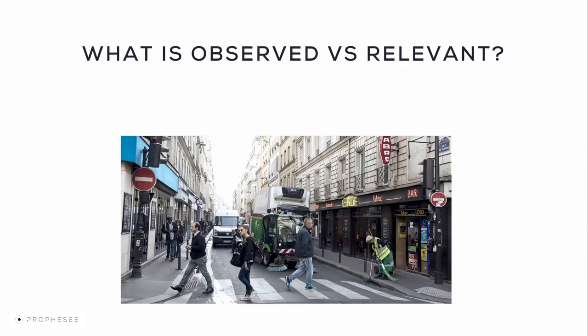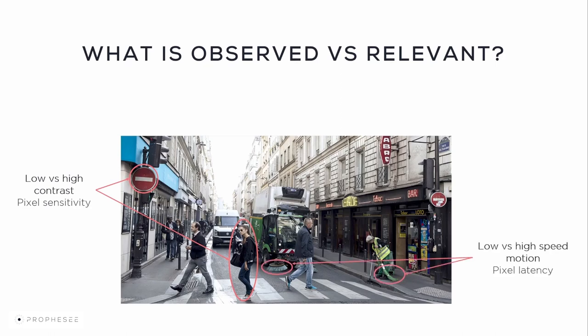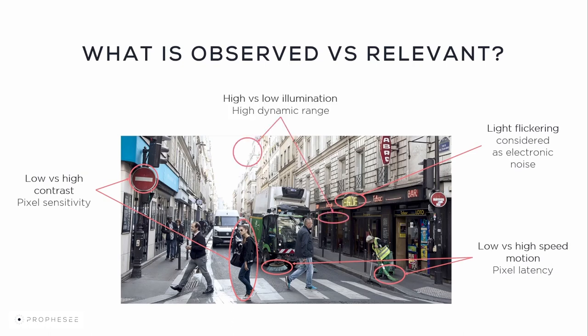Here's an example of a scene that can be viewed by an event-based camera. In the scene there is a lot of information and various activities happening. You can see low versus high contrast areas that could be addressed by adjusting pixel sensitivity. You can also see low versus high speed motion that can be enhanced by adjusting pixel latency or filtered using low-pass or high-pass filters. Light flickering, considered as electronic noise, can be filtered with the low-pass filter. High versus low illumination shouldn't pose any problem as the event-based sensor is inherently high dynamic range.